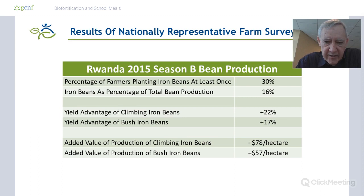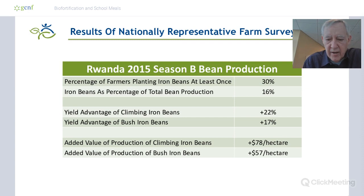You can't see the iron in the beans and you can't taste it. Why are they popular? Why have they spread so quickly? Because they're high-yielding. That's the basic strategy we're using for disseminating especially the high iron and high zinc crops.